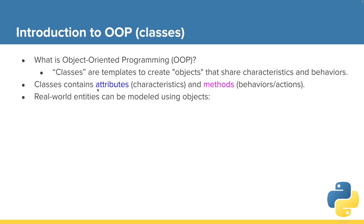Classes contain attributes and methods — essentially these two things are what make up classes. Attributes can be envisioned as characteristics, and methods can be envisioned as behaviors or actions: how do these classes act and what can they do? Whereas attributes describe them.